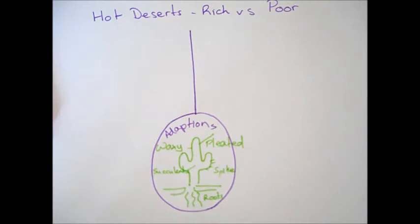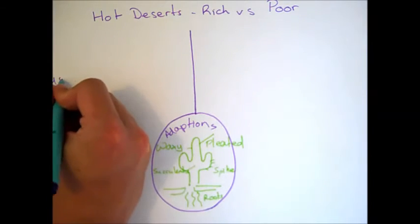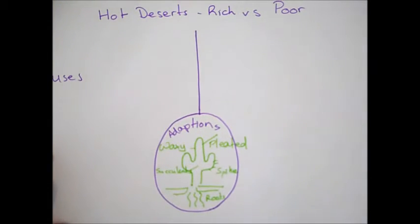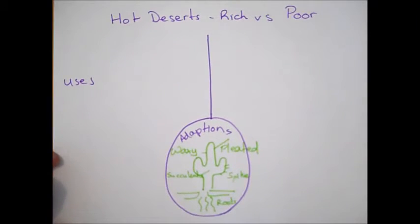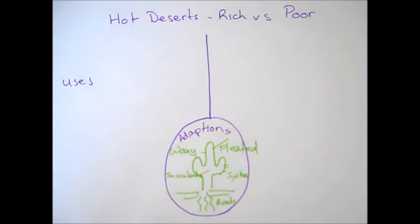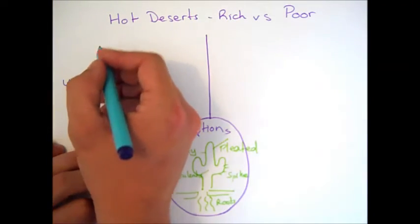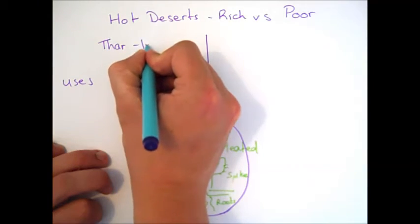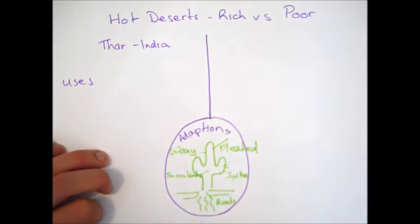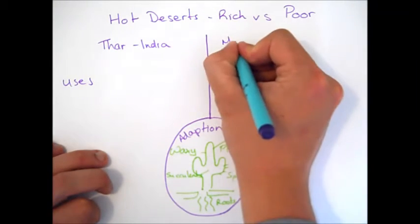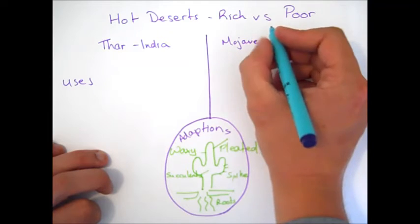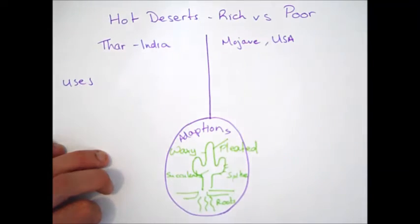The first things we want to look at are the uses of them, or the economic opportunities available in the two deserts. So, what are our two case studies? First off is our example of our poor desert. We've got the Thar Desert in India. It goes across the border to Pakistan as well. And then we've got the Mojave Desert in America, famous for having Las Vegas in it.